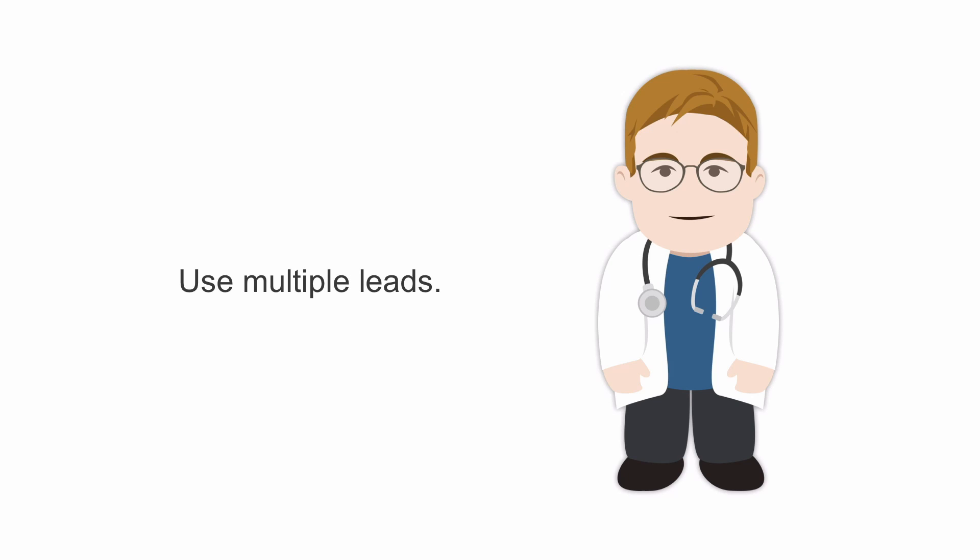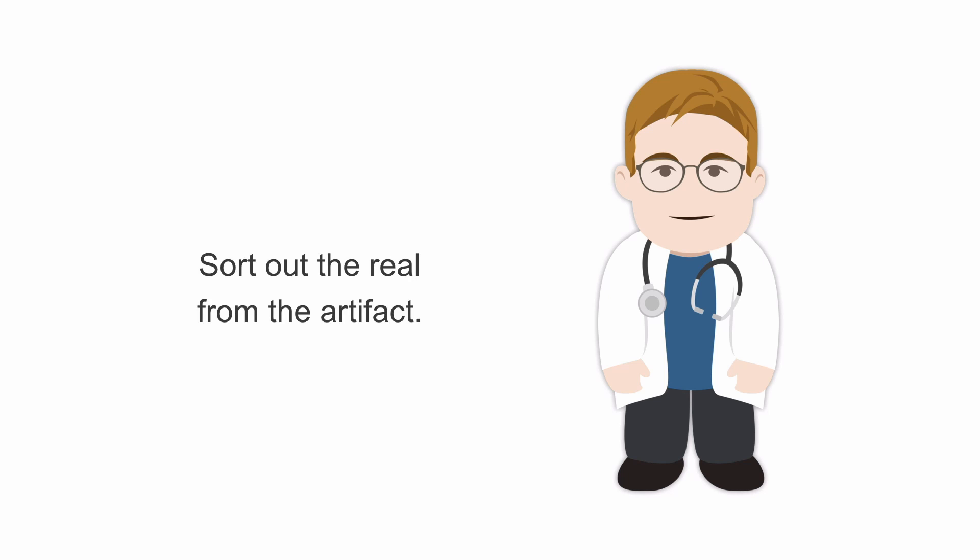So the ST segment is really our key. We can often rely on using multiple leads, but we should use leads that are next to each other. If we have a situation in lead II we want to sort out, let's look at II, III, and AVF. If we're not sure about V1, let's look at V1 and V2. We want to try to read through the snowstorm and find the polar bear by sorting out the real ST segment changes from the artifact.